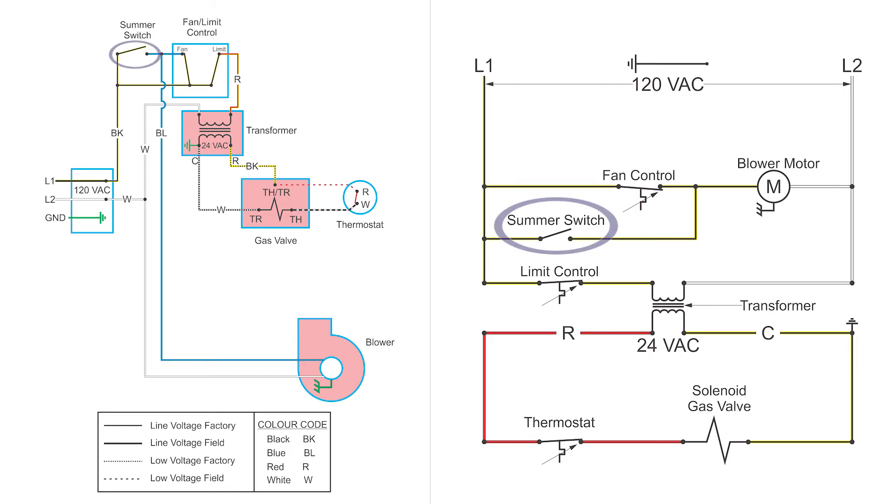And the last thing we want to look at is that summer switch. Summer switch is just a way to directly power up the blower, so it can circulate air through the house. The furnace can be in full operation with that summer switch closed, because it won't matter. It's the same power source going down to the blower.